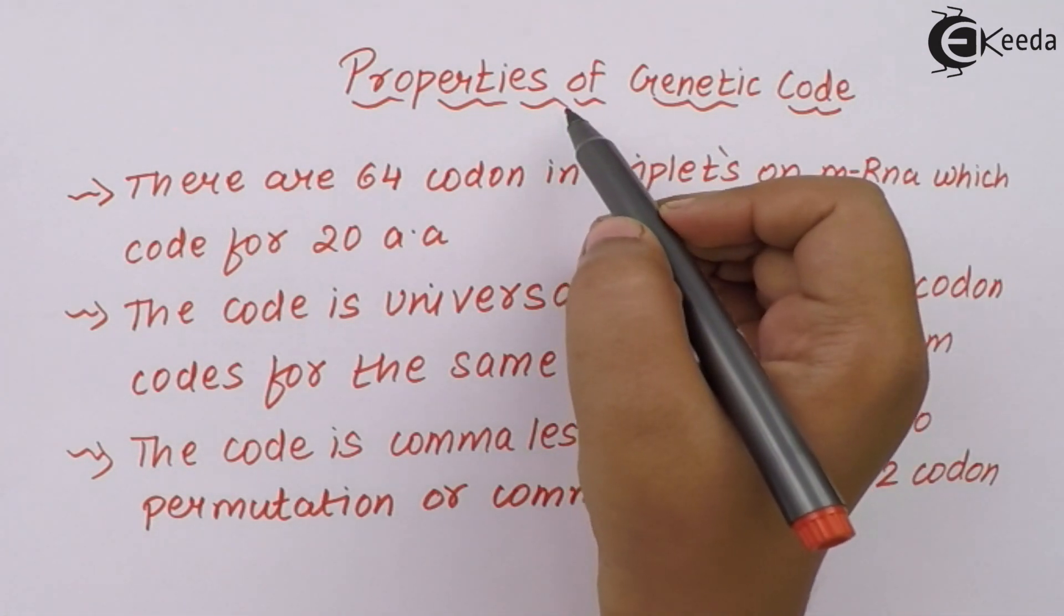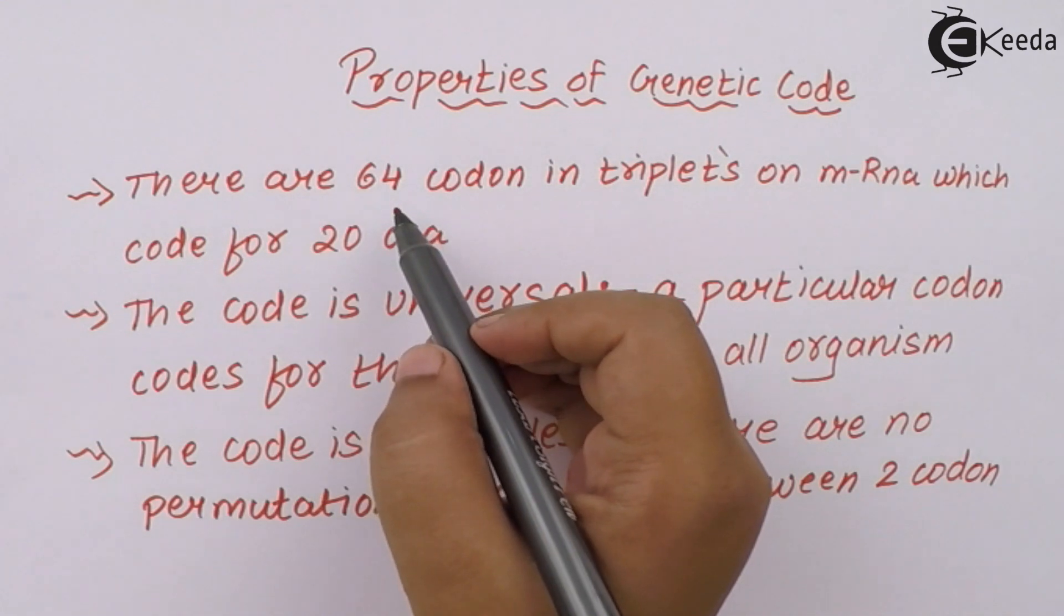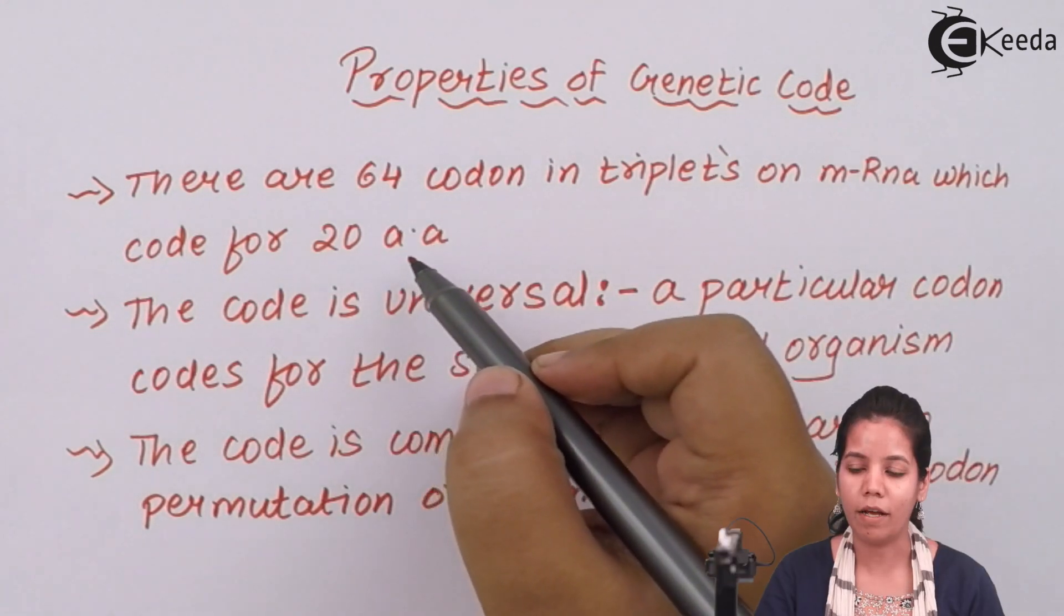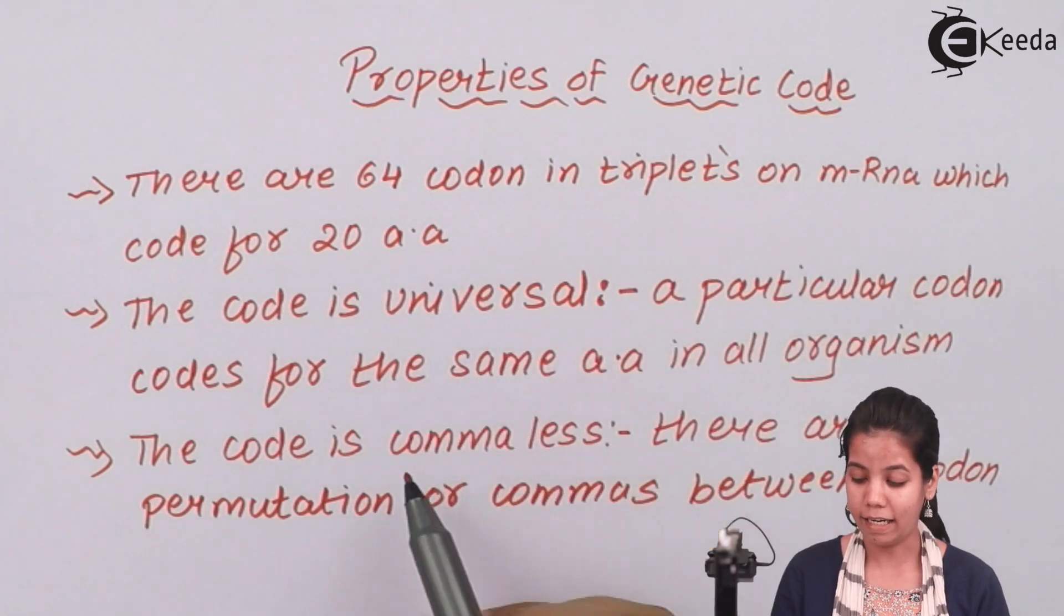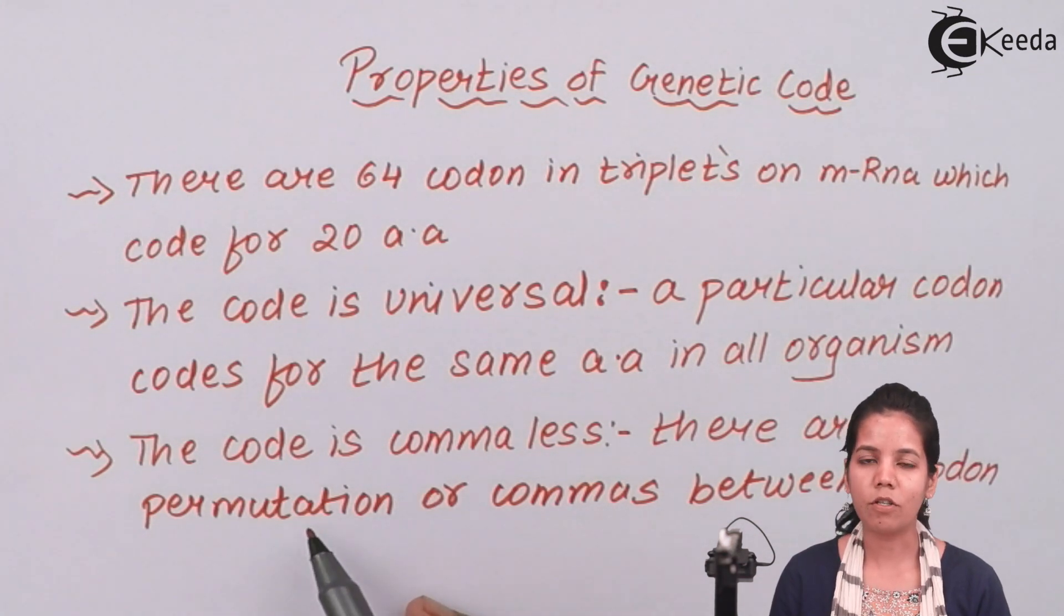The properties of genetic code are as follows. Total there are 64 triplet codons on mRNA which code for 20 different amino acids. The code is universal in nature. Secondly, the code is comma-less. That is, there are no permutation combinations or commas in a particular genetic code.